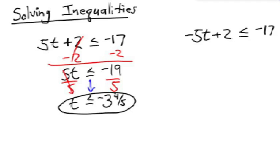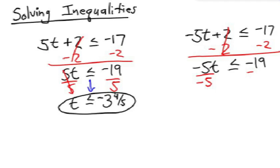On the right, we want to subtract 2 to solve. That leaves me with negative 5t less than or equal to negative 19. Divide each side by negative 5, and that gives me my answer of, in this case, it would be a positive 3 and 4 fifths.